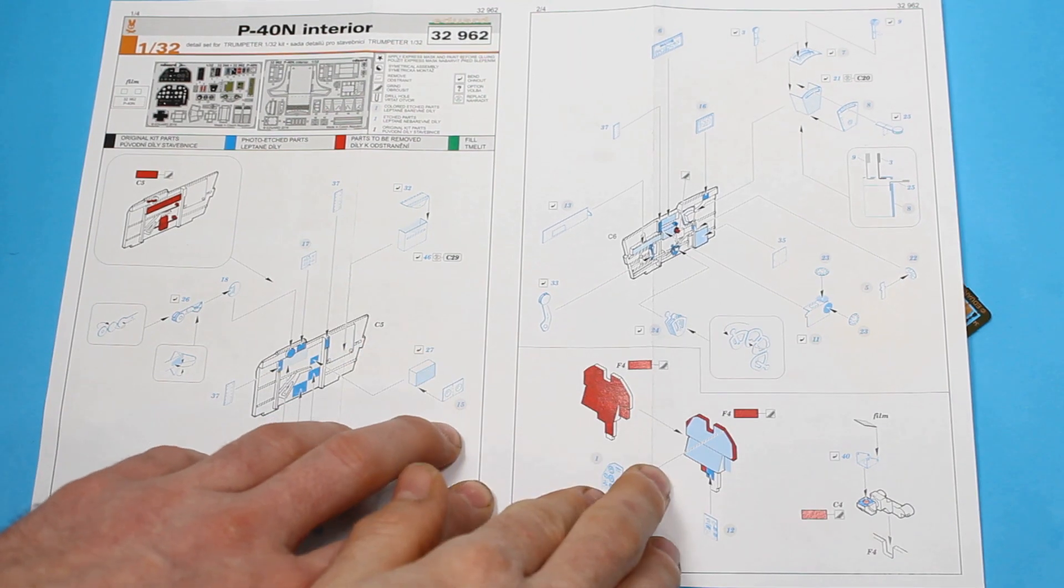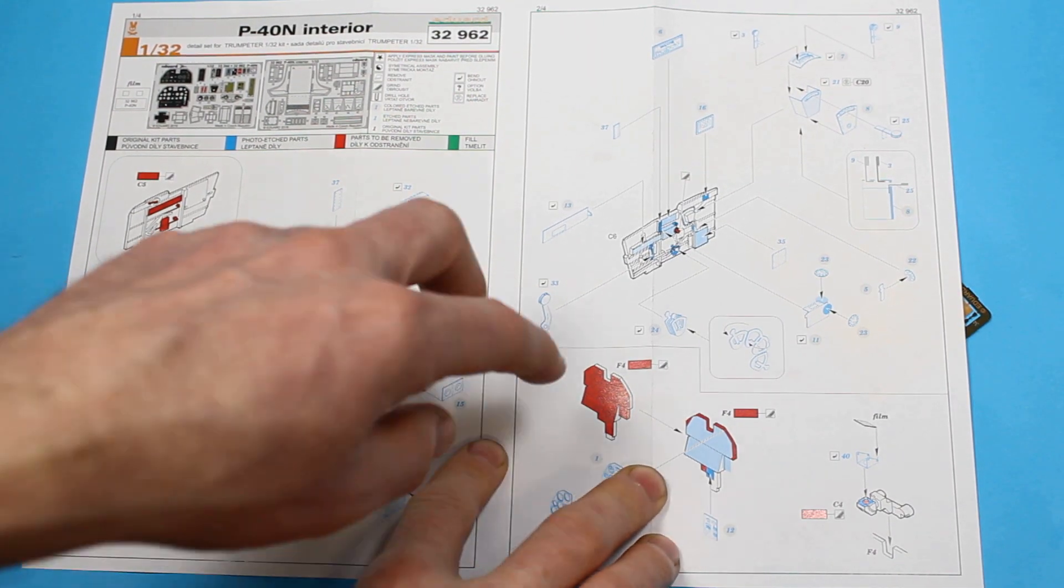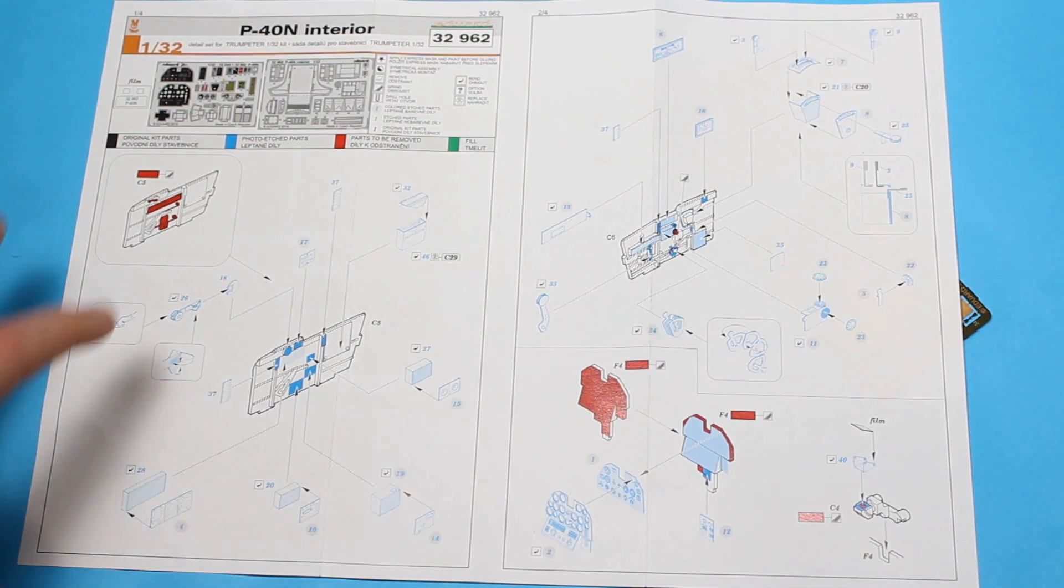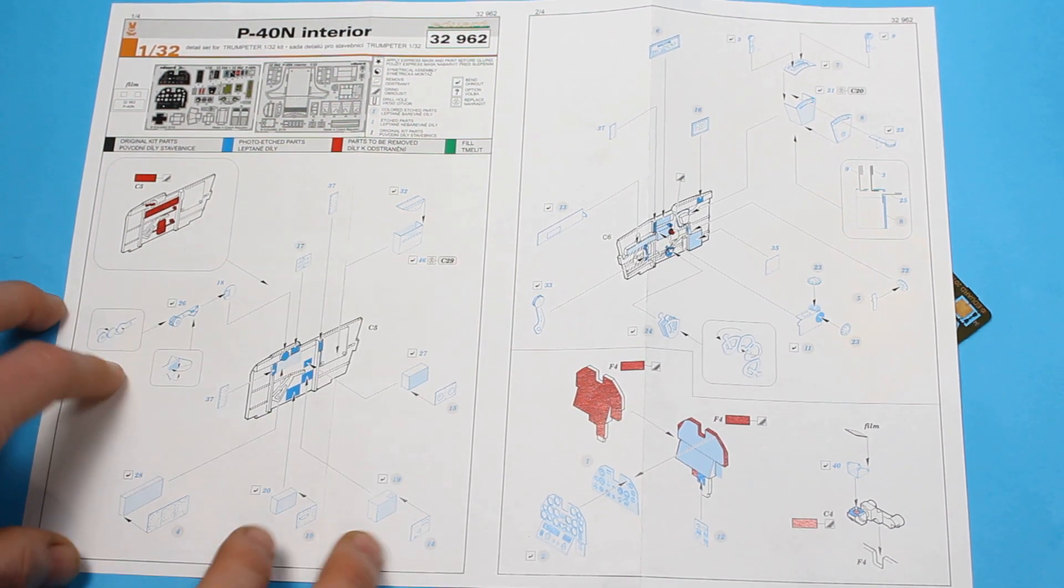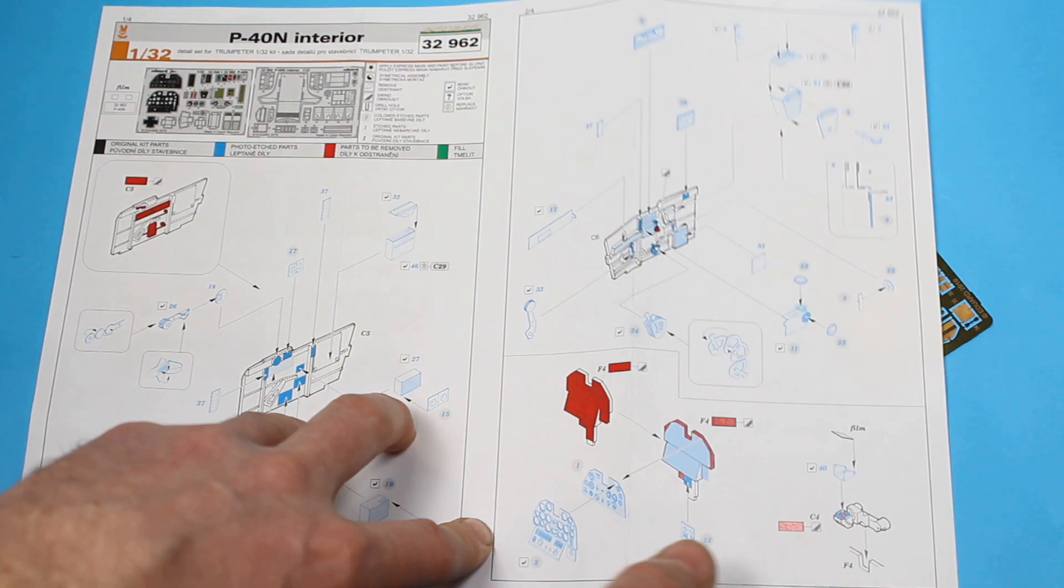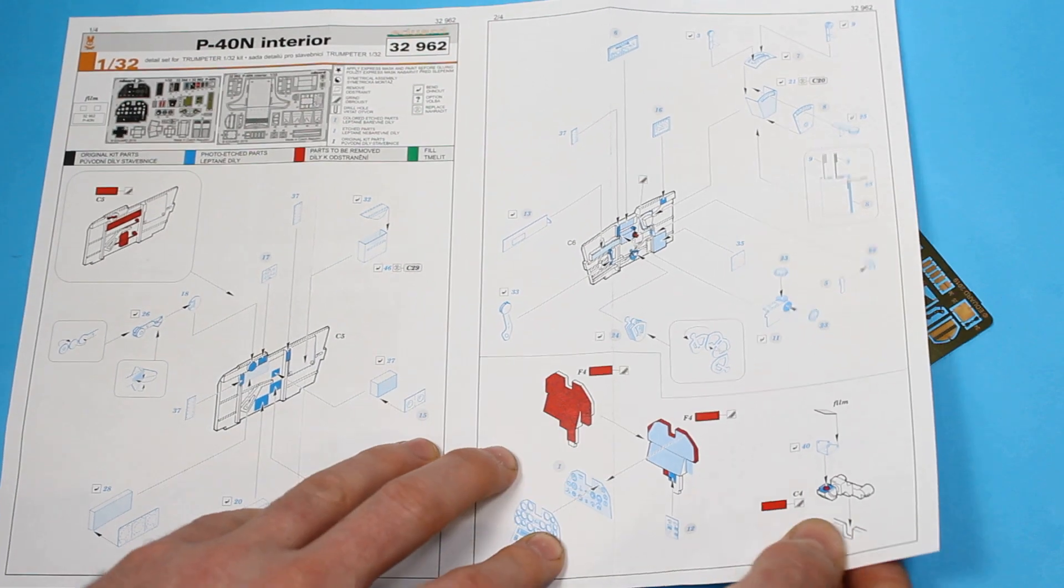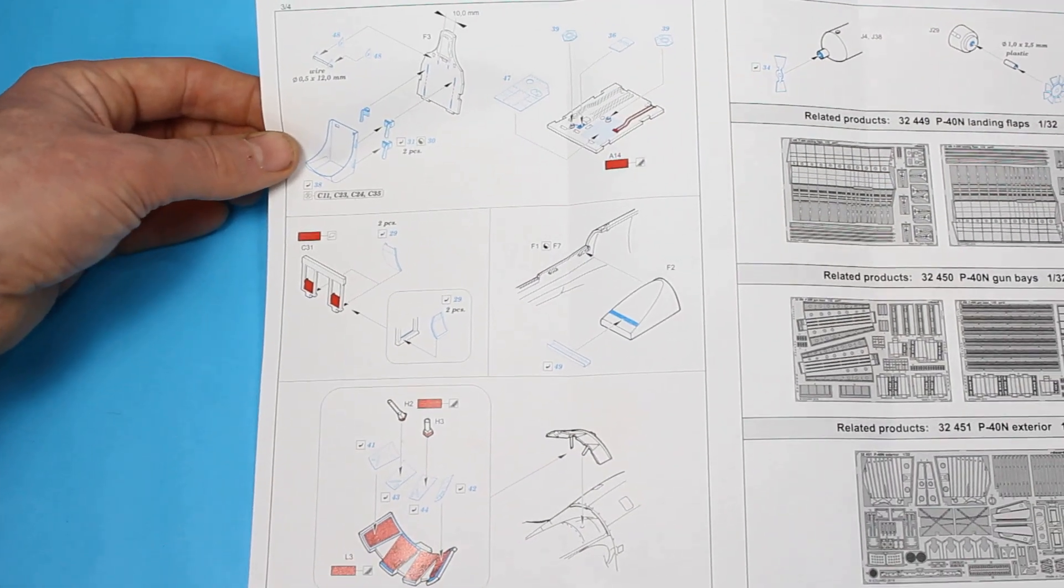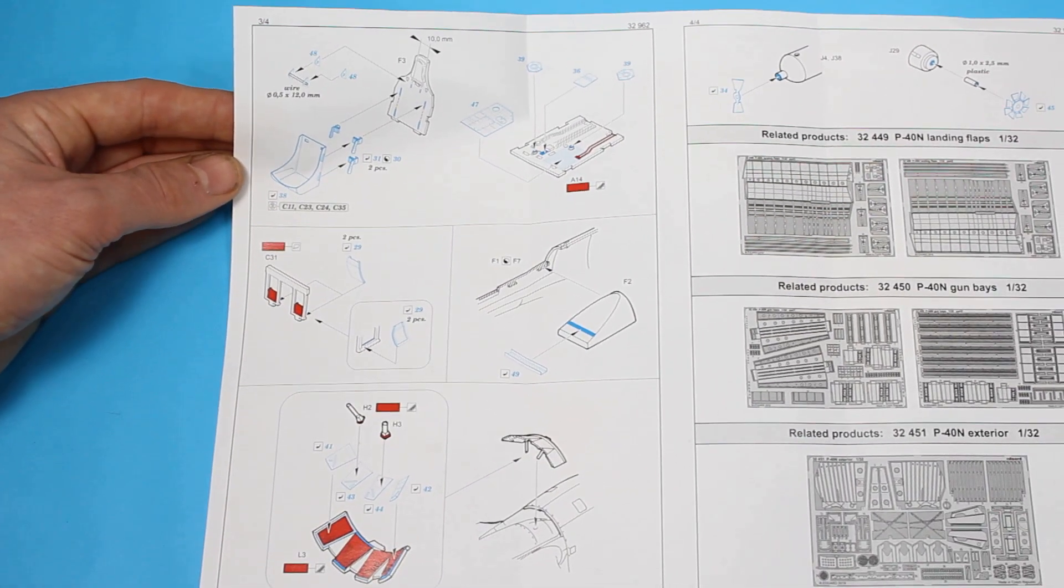All this set really offers in a major way compared to the kit is an enhanced instrument panel, which I think it really needs. Quite a bit of sidewall detail - again I think it's really lacking there. You also get the gun sight, which again is a major omission in the kit, and then the etch metal seat, which I think is a perfect thing to do.